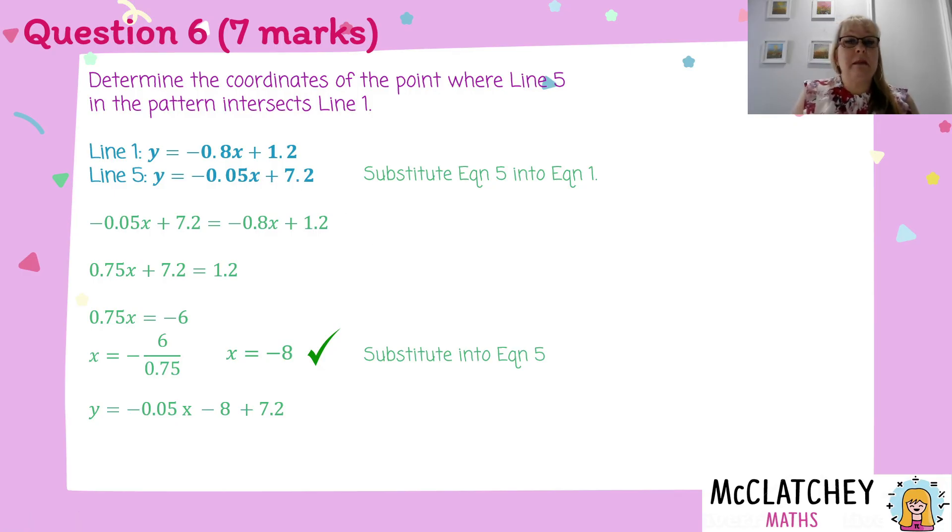Now I've put in here some communication. I'm going to substitute that into this equation. Why did I choose that equation? I just felt like it doesn't really matter. You could have chosen either. So I'm going to have negative 0.05 multiplied. Now notice that that is not the same symbol as that one there. That's a times now. It's not an x. We've substituted negative 8 where the x was. And when I work that out, I'm going to get a y-value of 7.6.